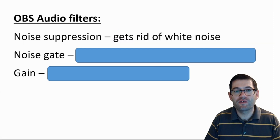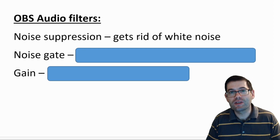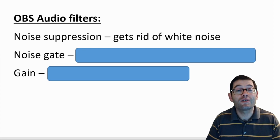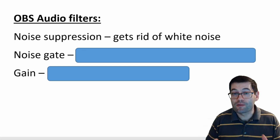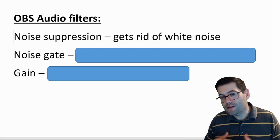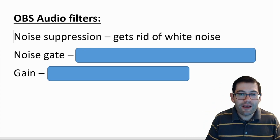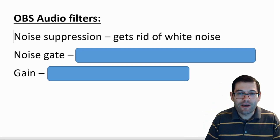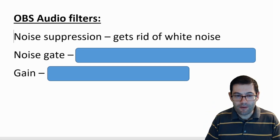The noise suppression filter gets rid of white noise. In other words, it gets rid of the background noise — the dogs, the cars, the children, whatever it might be. This will help to get rid of it.